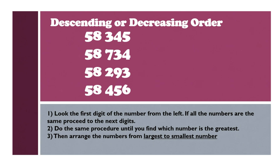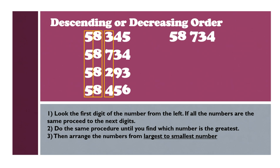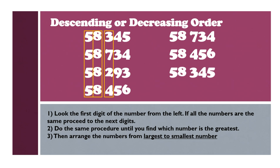Let us look at the highest place value, the 10,000th place — they all start with 5. Proceed to the next place value, the 1,000th place — they are all 8. Next, proceed to the 100th place. They have different numbers. The largest number is 7, so the first number is 58,734. The second number is 58,456. And the last number is 58,293.